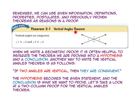Let's look at the vertical angles theorem: vertical angles are congruent. Because angle 1 and angle 3 are vertical angles, they are congruent. Because angle 2 and angle 4 are vertical, they are congruent. When we write a geometric proof, it is often helpful to separate the theorem into a hypothesis and a conclusion. Another way to write the vertical angles theorem would be: if two angles are vertical, then they are congruent. The hypothesis becomes the given statement and the conclusion becomes what we want to prove.